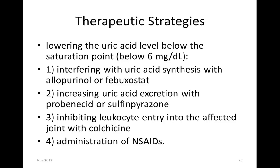The therapeutic strategy involves lowering uric acid below the saturation point of 6 mg per deciliter. You can interfere with uric acid synthesis using allopurinol or the newer xanthine oxidase inhibitor febuxostat. Increasing uric acid excretion with probenecid or sulfinpyrazone — these two agents are considered uricosuric agents. Inhibiting leukocyte entry into the affected joint with colchicine, which inhibits tubulin assembly and prevents leukocyte movement to the site. NSAIDs can also help with pain and inflammation.